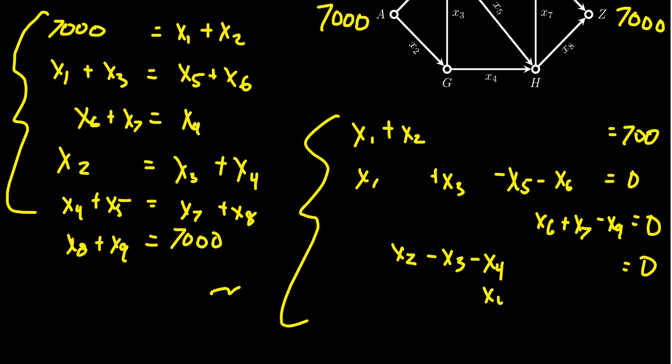So you get X2 minus X3 minus X4 is equal to 0. Next, we're going to get X4 plus X5 minus X7 minus X8 is equal to 0. And in the last situation, you get X8 plus X9 is equal to the 7,000. I'm a little crowded over there. Sorry about that. But then we get this system of linear equations like so.